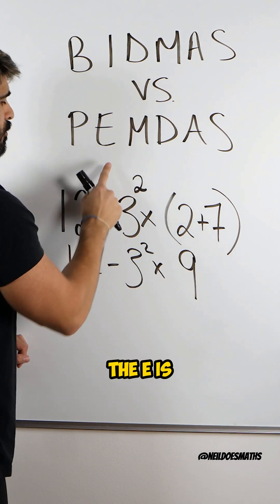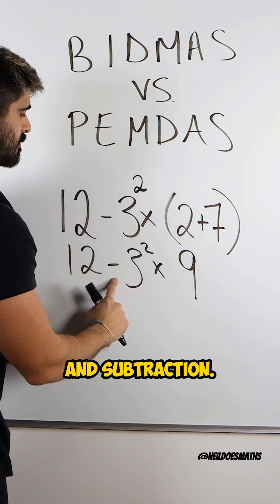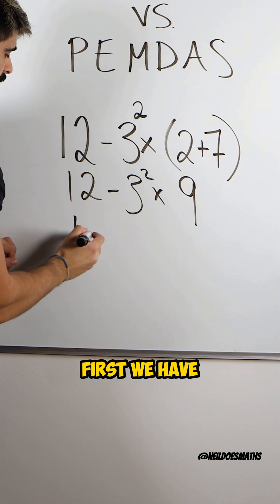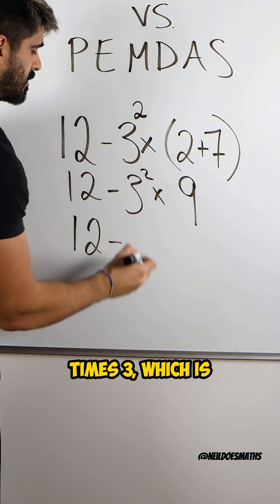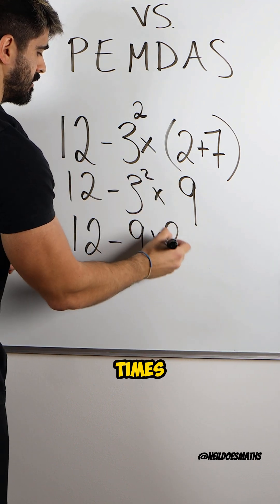So we know the I or the E is more powerful than multiplication and subtraction. So we're going to do that first. We have 12 minus three squared is three times three, which is nine times nine.